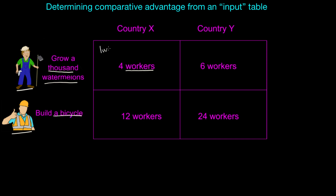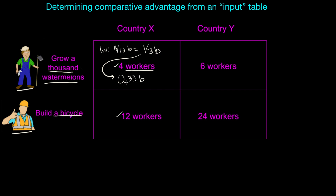Let's start with watermelons in Country X. It's very helpful to tell a story when calculating opportunity cost using an input table. The four workers needed to produce a single watermelon could have produced only four-twelfths of a bicycle, because you would have needed three times as many workers to produce a single bicycle. That means the opportunity cost of watermelons is one-third, or 0.33 bicycles per watermelon.